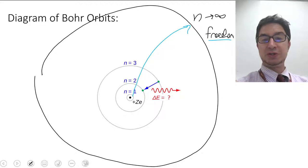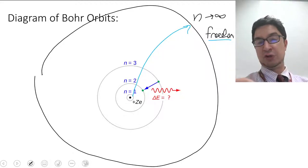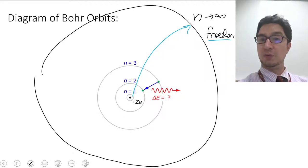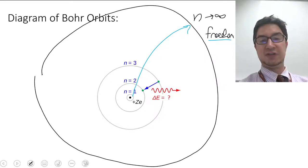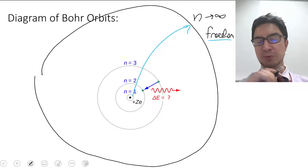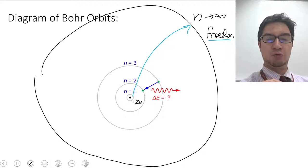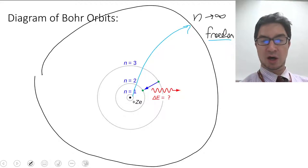When we talk about electrons jumping levels, we mean an electron jumping from level 1 to 2, 1 to 3, 1 to 4, and so on. Electrons can also jump back down — from n equals 5 to n equals 3, or n equals 5 to n equals 2. Any jump in principal quantum number can result in either an emission or an absorption of a photon.